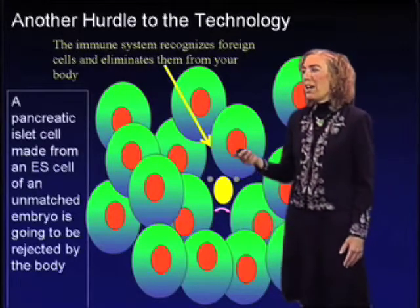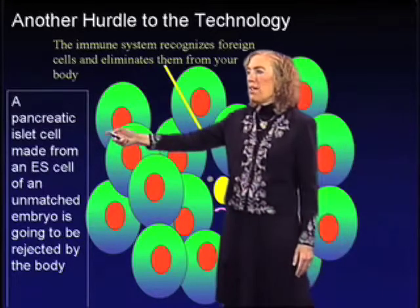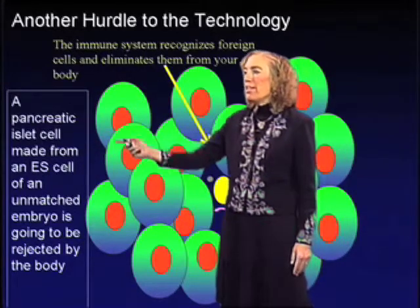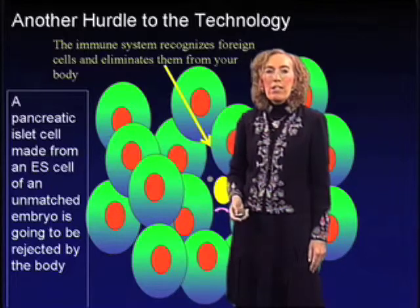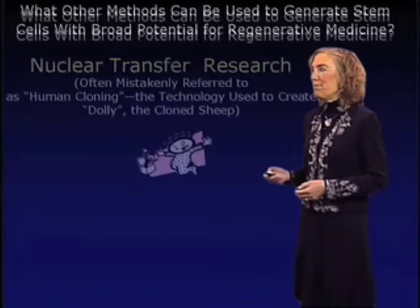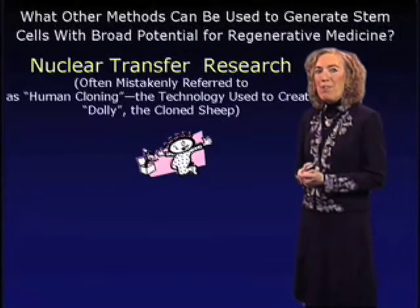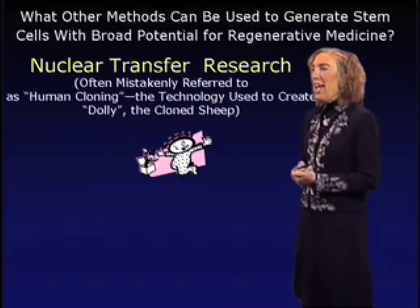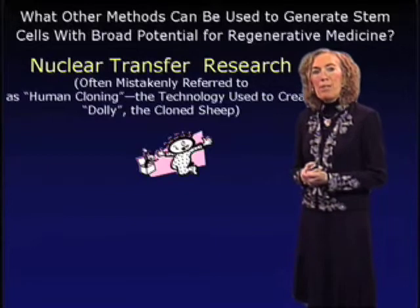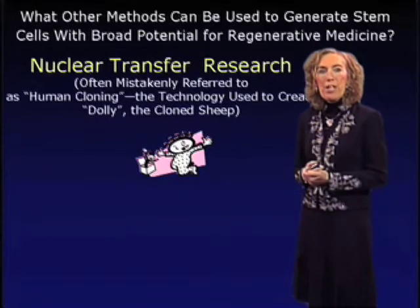A pancreatic islet cell made from an embryonic stem cell of an unmatched embryo is still going to be rejected by the body. So what other methods can be used to generate stem cells with broad potential for regenerative medicine? Scientists have worked on this a lot, and one technology developing over the last five to ten years is that of nuclear transfer research.